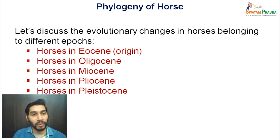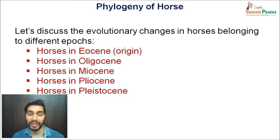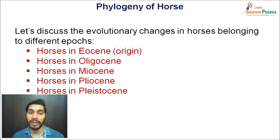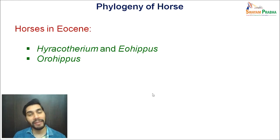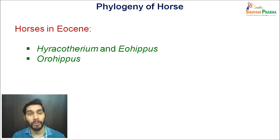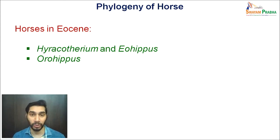Starting with horses of the Eocene, which is the origin point of horse evolution where the first known fossils have been found in the form of Hyracotherium or Eohippus, we will also discuss Orohippus from this epoch. We will focus on their structures — how they looked, their skull, forelimb and hindlimb, their feeding habits, and so on, discussing these according to evolutionary trends.